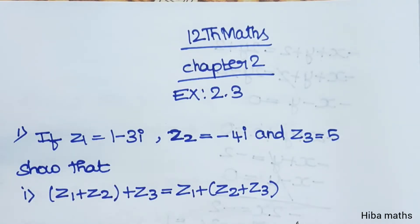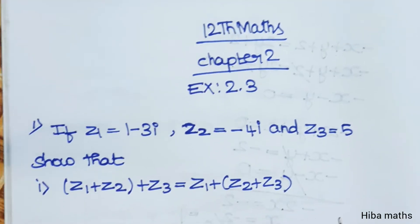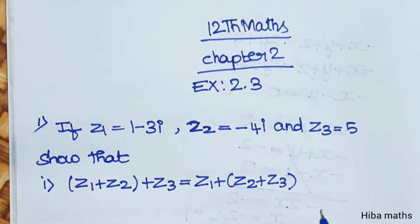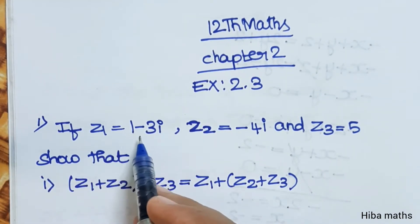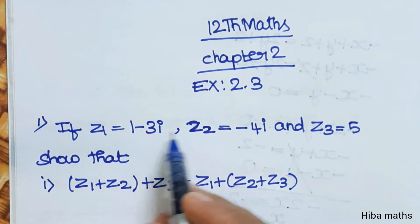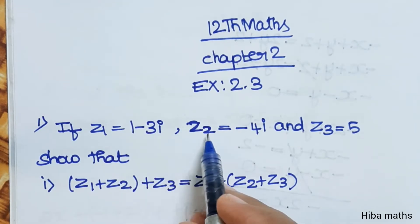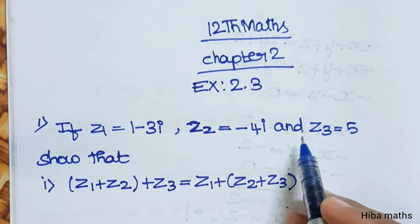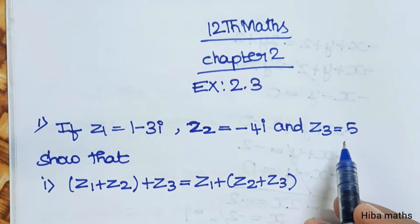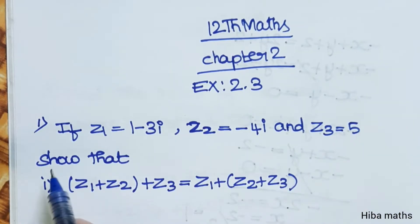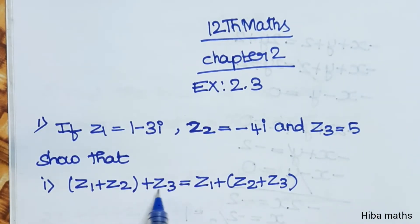Hello students, welcome to Hibamax 12th Standard Maths, Chapter 2, Exercise 2.3. First question: if z1 is equal to 1 minus 3i, z2 is equal to minus 4i, and z3 is equal to 5, show that z1 plus z2 plus z3 is equal to z1 plus z2 plus z3.